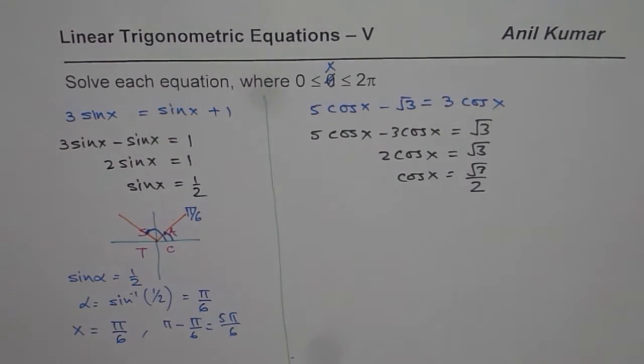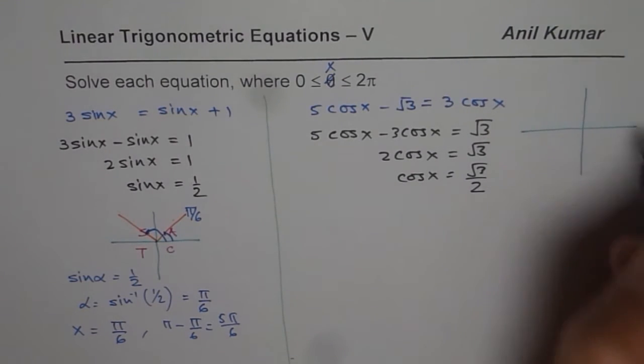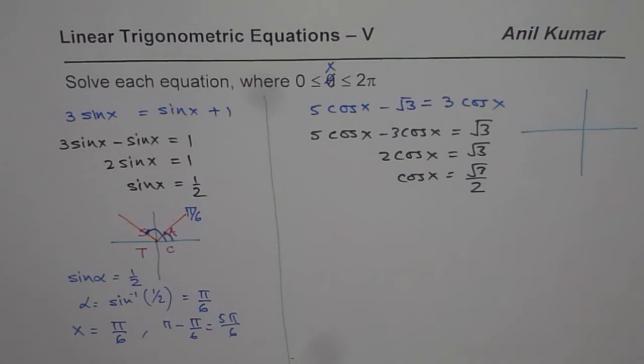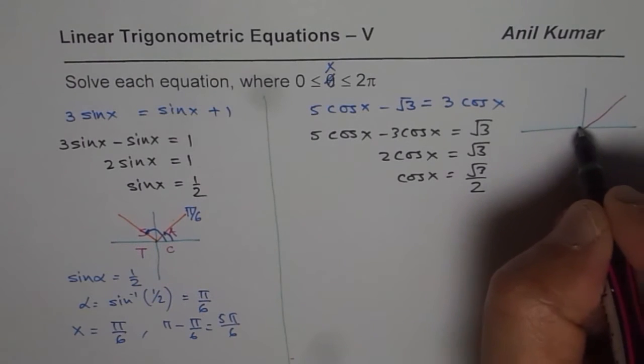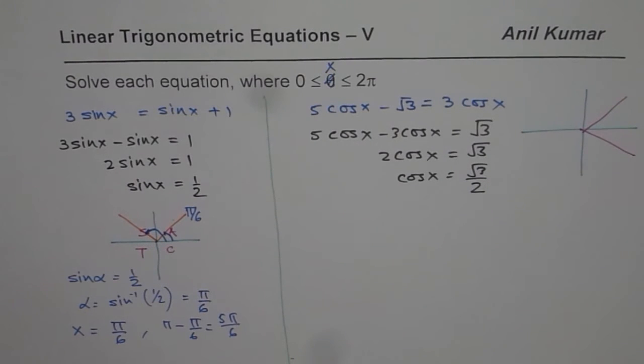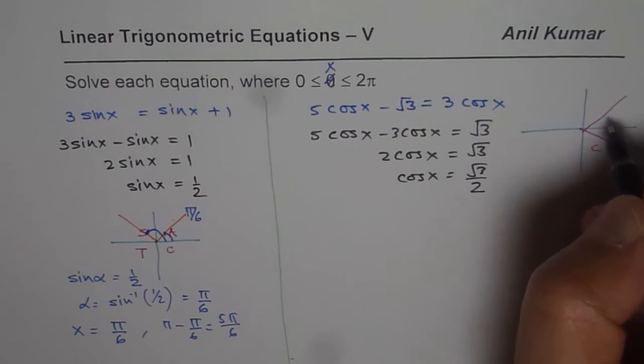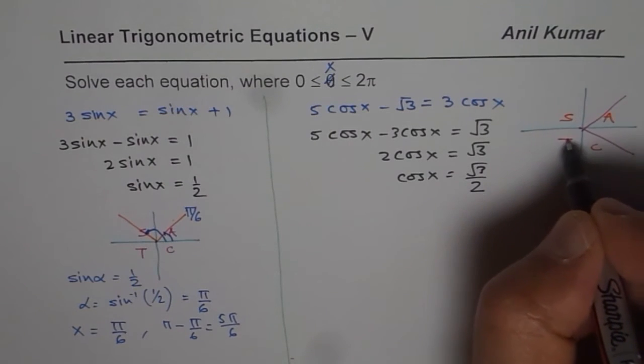Now as far as cos(x) is concerned, it is positive in which quadrants? It is positive in quadrant 1 and in quadrant 4. How do we get it? We get it from the cos rule.